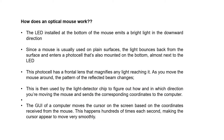How does an optical mouse work? The LED installed at the bottom of the mouse emits a bright light in the downward direction. Since a mouse is used on a plain surface, the light bounces back from the surface and enters the photo cell that is also mounted on the bottom, almost next to the LED, as seen in the picture on the previous slide. This photo cell has a frontal lens that magnifies any light that reaches it.